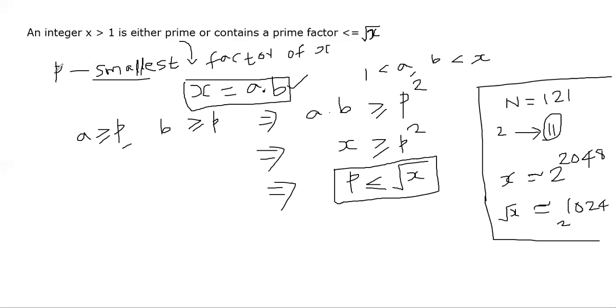And now we can make use of the fact that p is the smallest prime factor of x and we proved that since p is the smallest prime factor of x, a must be greater than or equal to p and b must be greater than or equal to p, and therefore we can conclude p is bounded by square root of x. That's all, thank you very much.